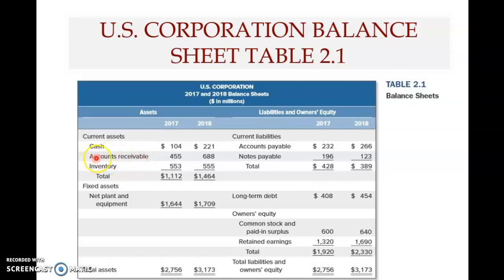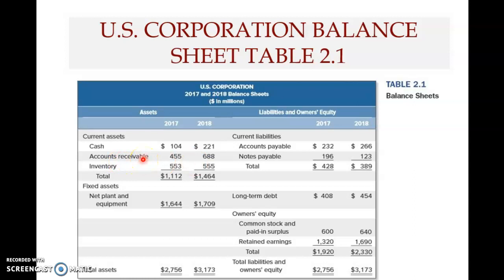The second item is accounts receivable, which represents what customers owe the company. Here, 688 million dollars worth of goods had already been sold to US Corporation's customers, but the company had yet to collect payment. The customer still owes the company 688 million dollars — that is what accounts receivable represents: what the company is yet to receive from its customers.